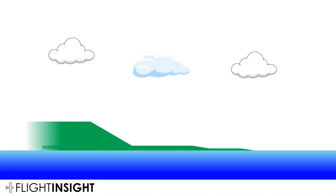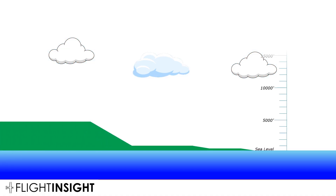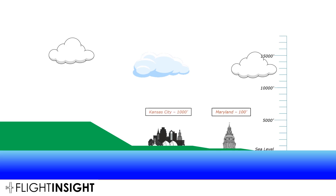Let's look at altitude on a vertical scale. We've got three frames of reference to help us out. The first is here in Maryland, close to sea level. The second is Kansas City, in the middle part of the country where the elevation is a bit higher — 1,000 feet. And the third is Denver, the mile-high city at about 5,000 feet.